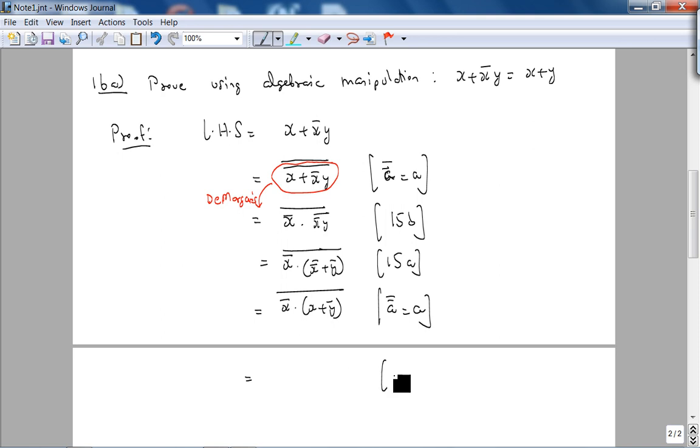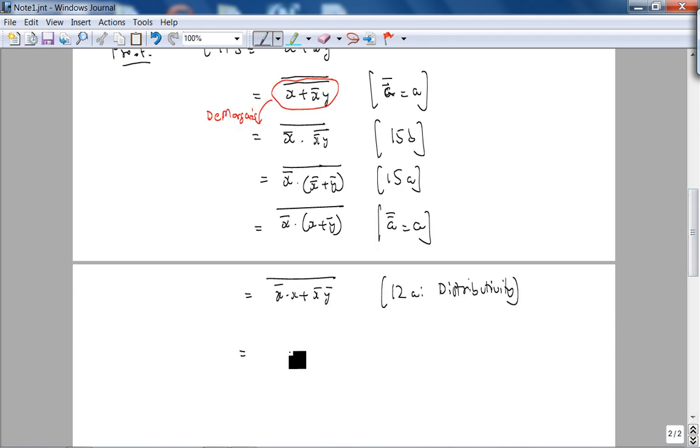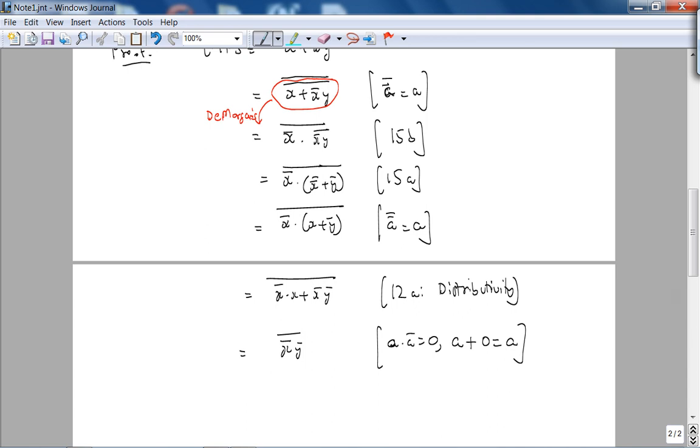Again, you don't want to write in different colors in a mathematical proof, I'm just doing this so you can understand what's going on. So I'm going to apply 15b here to this expression and simplify it at the same time. So basically what I'm going to get is (x NOT AND (x NOT OR y NOT) NOT). So if I apply De Morgan's to this, so I'll just write 15a, I get x NOT AND (x NOT NOT OR y NOT NOT). So x NOT NOT is x, so this becomes x NOT OR (x OR y NOT NOT). So a NOT NOT is a.